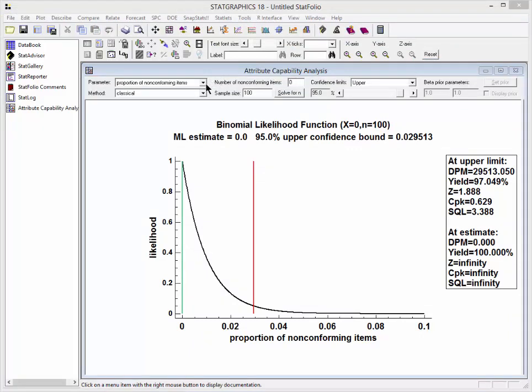There are several fields I can set. The parameter that I want to estimate is, in this case, the proportion of non-conforming items. I'll be using the classical methods. In the field labeled number of non-conforming items, I put the value for X, which in this case is 0. In the sample size field, I put the value for n, that's 100. Where it says confidence limits, I can choose either upper bounds or two-sided confidence interval. In this case, the defaults work fine.